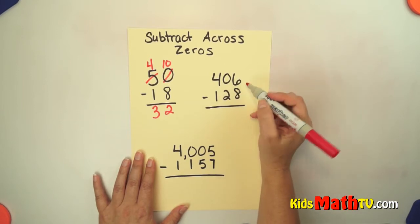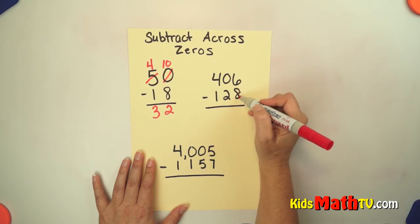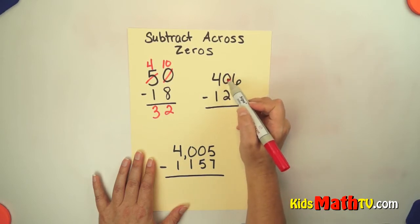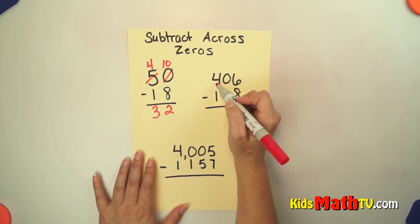Let's try another one. 6 minus 8. Well, I need some help there. I need to borrow, but there's nothing to borrow from here because that's 0. So I'm actually going to go all the way to the hundreds to borrow.